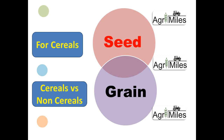For example, in different contexts we can say the same thing as a seed or the same thing as a grain, especially in case of cereals. We will try to further understand that particular difference under which we will say the same thing as a seed or the same thing as a grain.